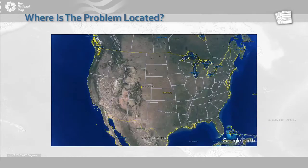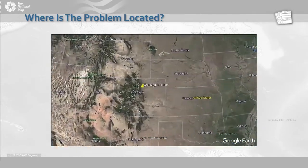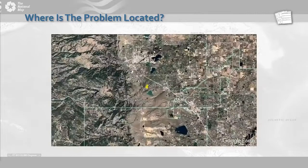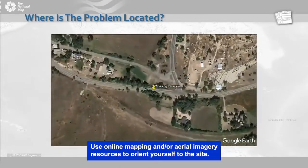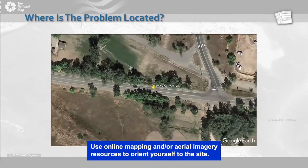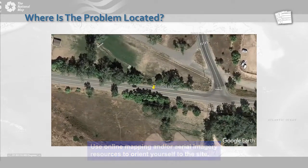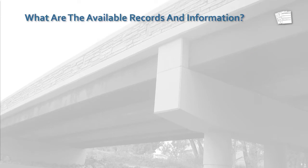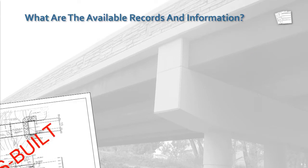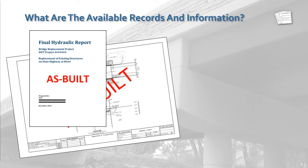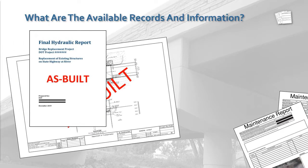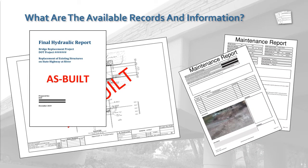Where is the site located? Use an online or other geographical information system (GIS) mapping application to view the site from aerial imagery. This will help you orient yourself to the site and understand nearby land uses. Are maintenance records, as-built drawings, and drainage reports available? As-built drawings and reports, if available, would be good to review to understand the intended design and function of the site. Maintenance reports and staff can be a good source of information about regular maintenance activities near the site.